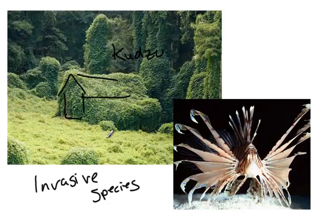This is the lionfish, native to the Pacific Ocean. We're starting to see it now in the Gulf of Mexico. It's a voracious hunter and is outcompeting the fish that would normally be found in the Gulf of Mexico for food. There's fear that it may become a more dominant predator in the Gulf of Mexico and displace the more native species.